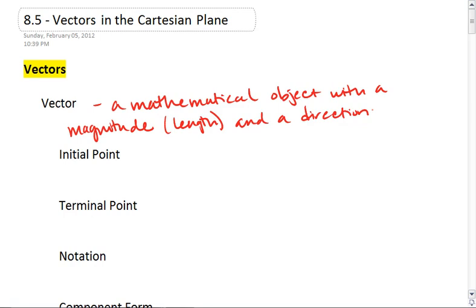Vectors have an initial point, so that is our starting point. And a terminal point, or our ending point.